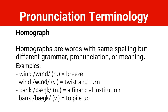Let's talk about homographs. Homographs are words with the same spelling — meaning we write them with the same alphabet — but different grammar, pronunciation, or meaning. It's important to know that if one of these is different, we can call it a homograph, except for the spelling. Same spelling but different grammar, maybe different pronunciation, or maybe different meaning.